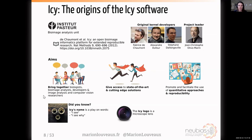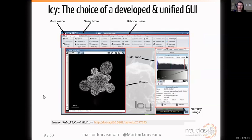Now I'll go back into the details of the graphical user interface of ICY. It's a unified graphical interface, all in one block with consistent design over different panels and plugins. It's mainly composed of three blocks: a ribbon menu, a viewer, and the side pane. I'm going to detail the viewer and the side pane.